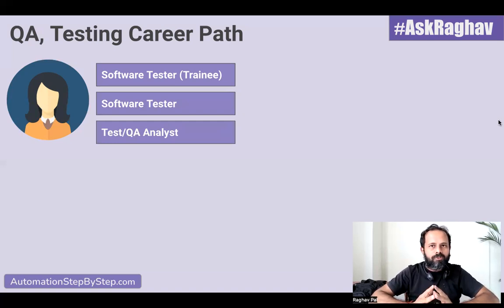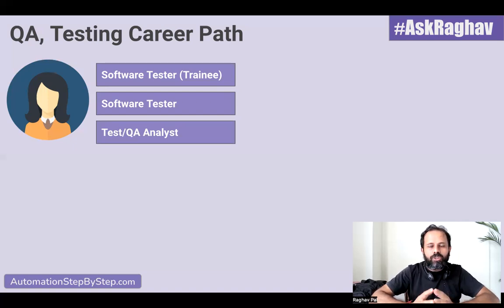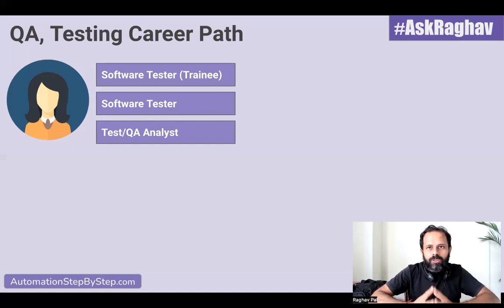After a few years as a software tester, you will become a test analyst or a QA analyst. Along with all the earlier things you were doing, you will be involved in the QA process right from the beginning — where we discuss requirements, what should be the testing strategies, what should be the test plan, how we will manage the testing process, what user stories should go in, how we will test these user stories, what tools and techniques should be involved. So you will have visibility in the complete QA process from beginning to end.